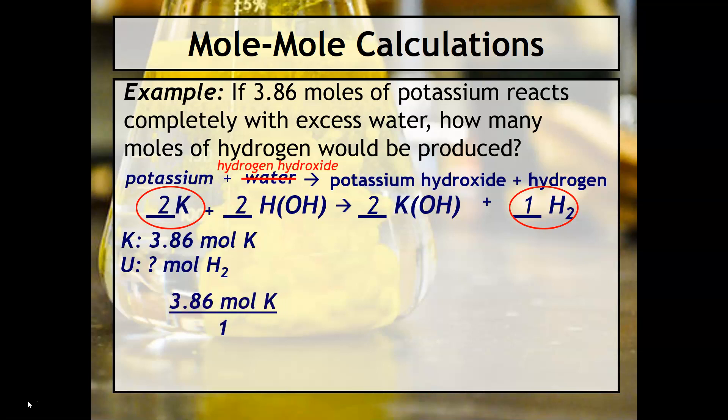So we'll take our 3.86 moles of potassium and we'll put it over one like usual. We'll draw our multiplication sign. And what we again are trying to do is draw a ratio between the potassium and the hydrogen. So what we see here is for every two moles of potassium that are reacted, you can produce one mole of hydrogen, assuming that you have as much water as you need. So that's why the ratio is going to be 2 mol K to 1 mol H2.